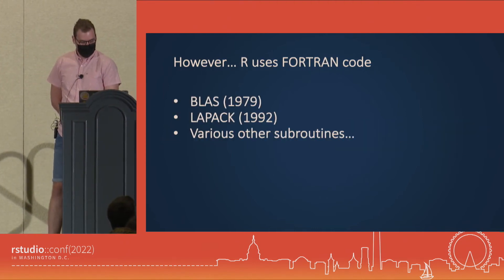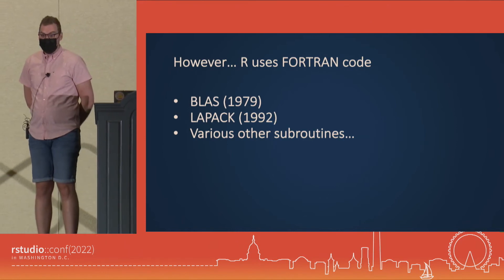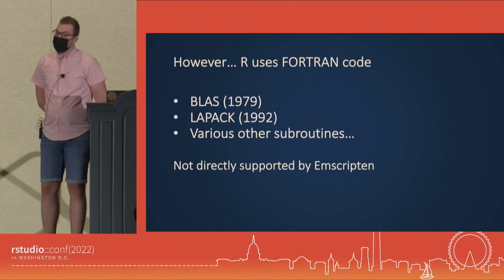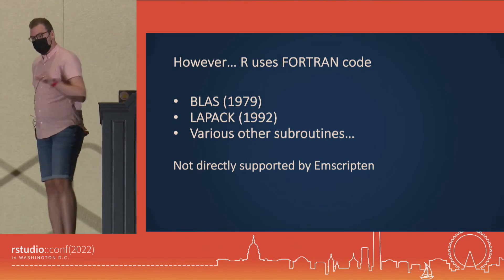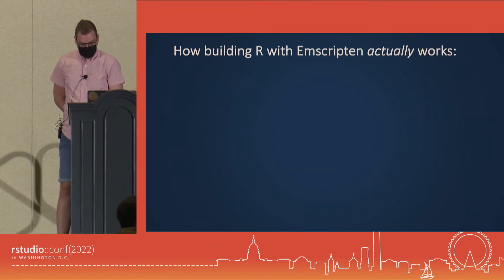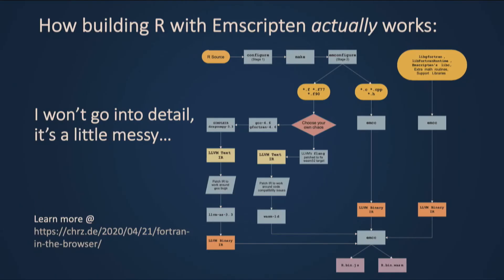But there's a problem: R uses Fortran code. Some of the inherited code had original releases from the 1970s. And even worse, Emscripten can't directly compile Fortran code — notice I say directly, because there is a trick. Unfortunately the trick makes things a bit more complicated, as you can see. I won't go into detail — it's very messy, but there's a link if you're interested. One point: there's a step in the process called 'choose your own chaos,' where you choose between using an ancient version of GCC or an unreleased version of LLVM. So pick your poison.